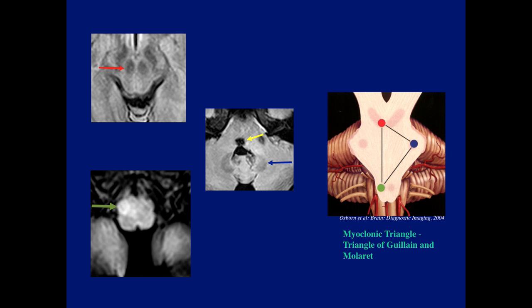Again, we have the myoclonic triangle involving the region of the dentate or the fibers leading from the dentate. The red nucleus does not really show any changes by current MR techniques, and we see the changes in the olive. Notice the opposite side: this is on the left side, and the red nucleus and the olive on the right side.